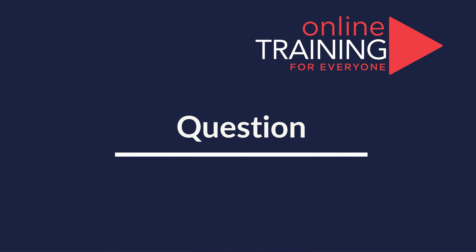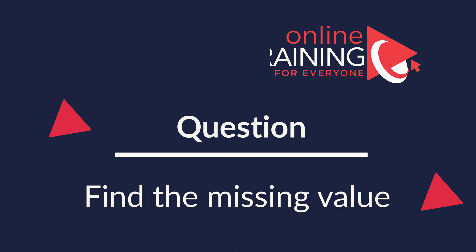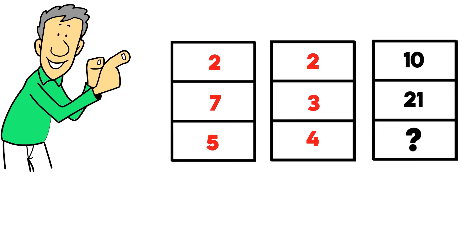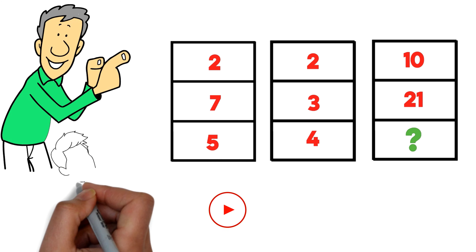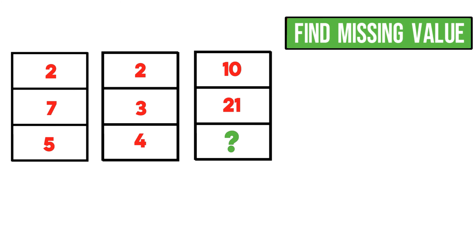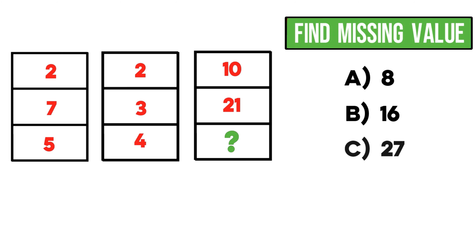I'm extremely excited to share with you a question that tests your pattern recognition skills. You are presented with three columns, each with three numbers. The first column has 2, 7, 5; the second column has 2, 3, 4; and the third column has 10, 21, and one missing number. You need to find the missing value. The choices are: choice A is 8, choice B is 16, choice C is 27, and choice D is 36.